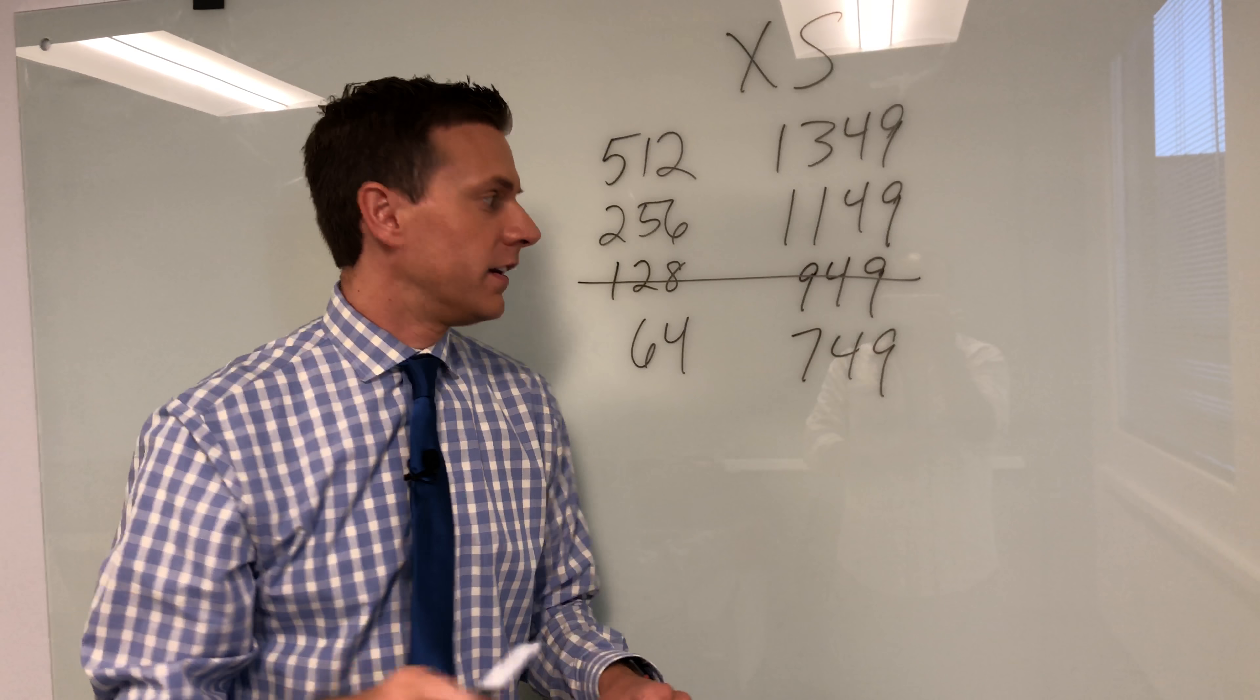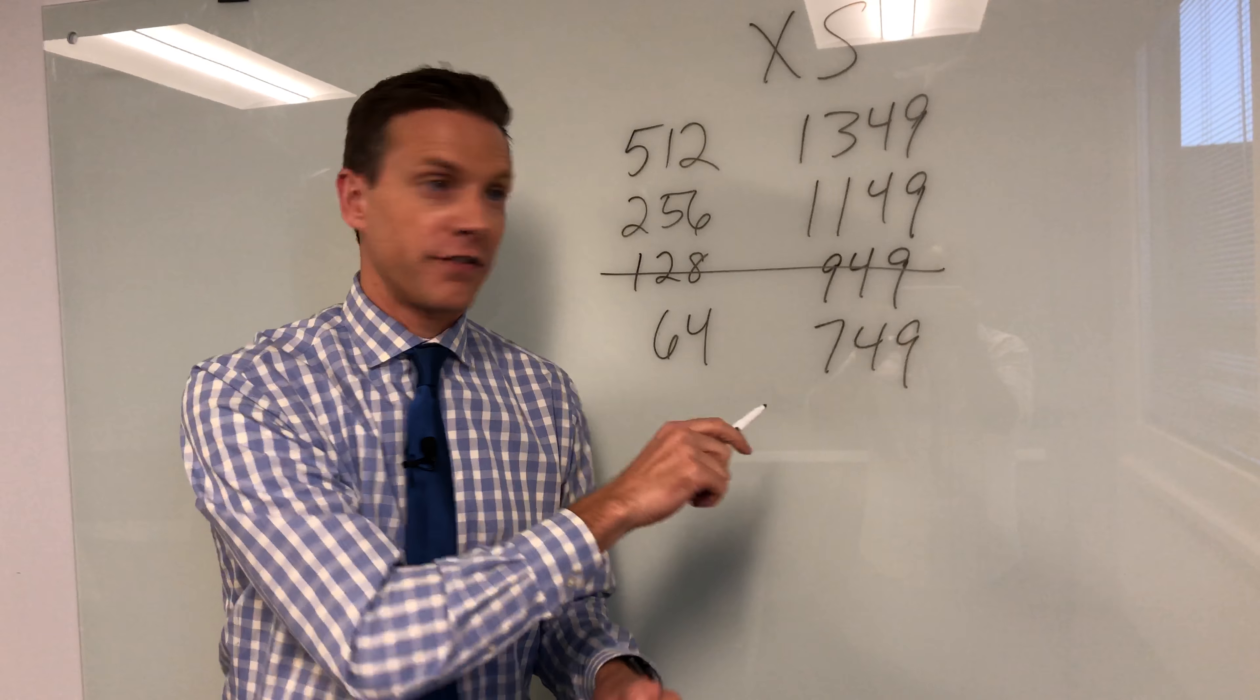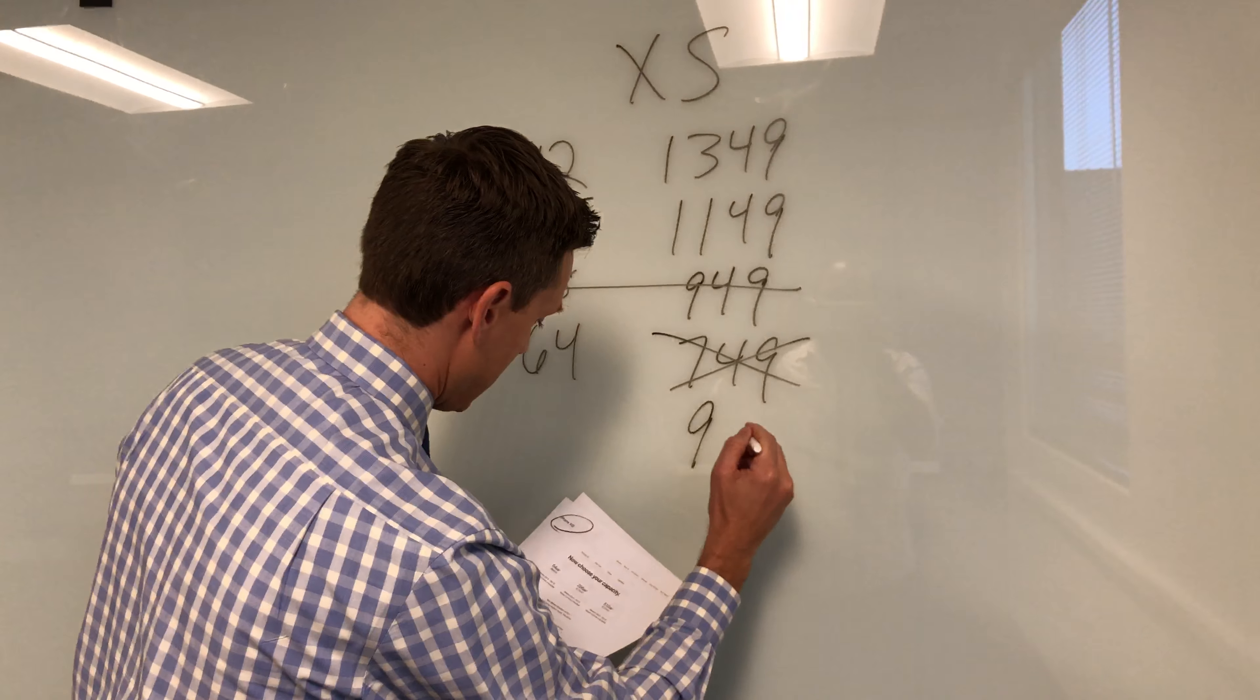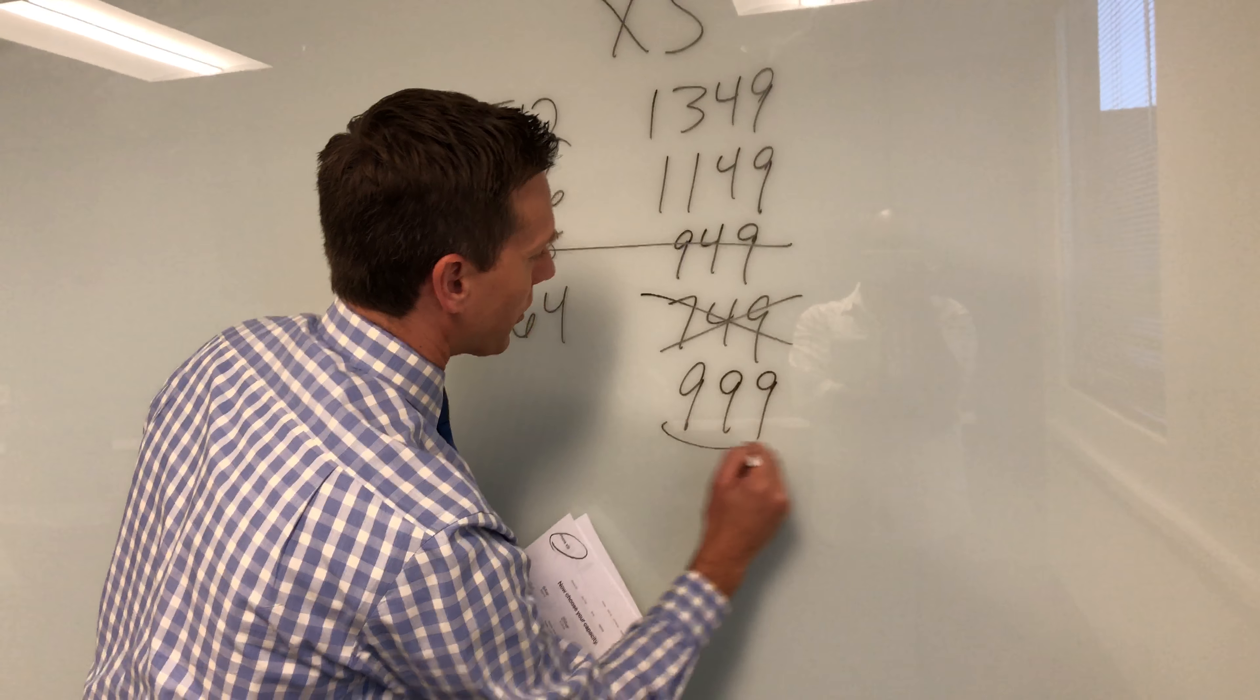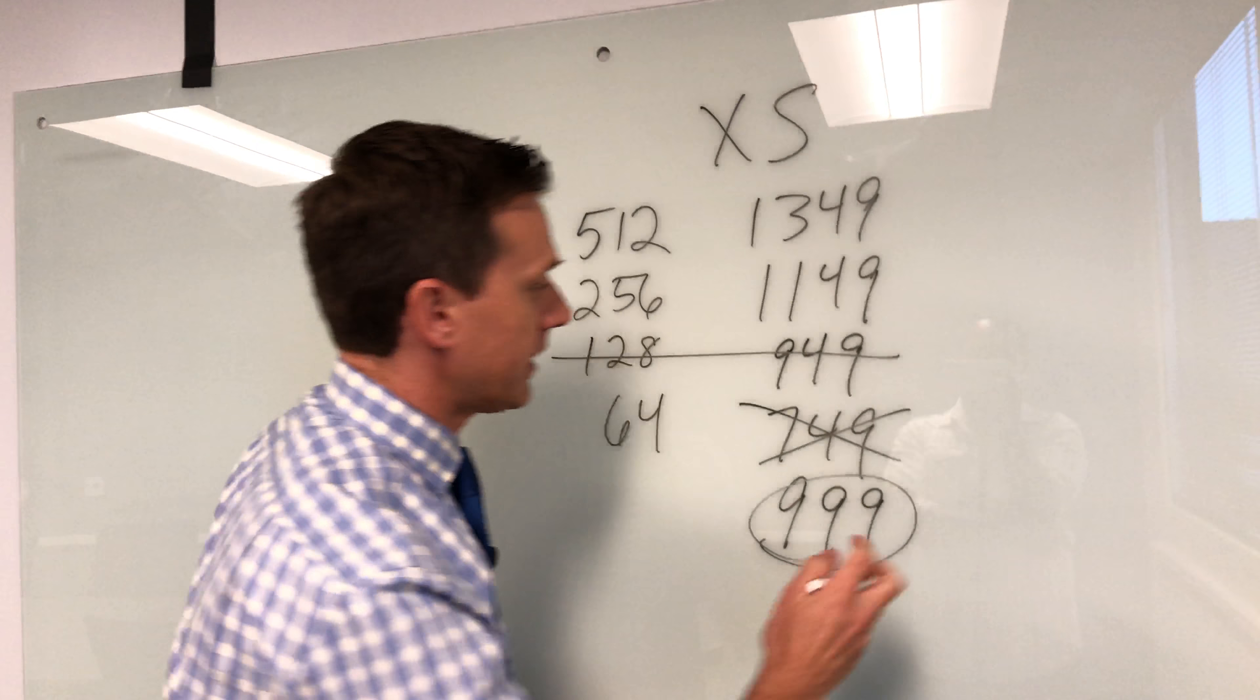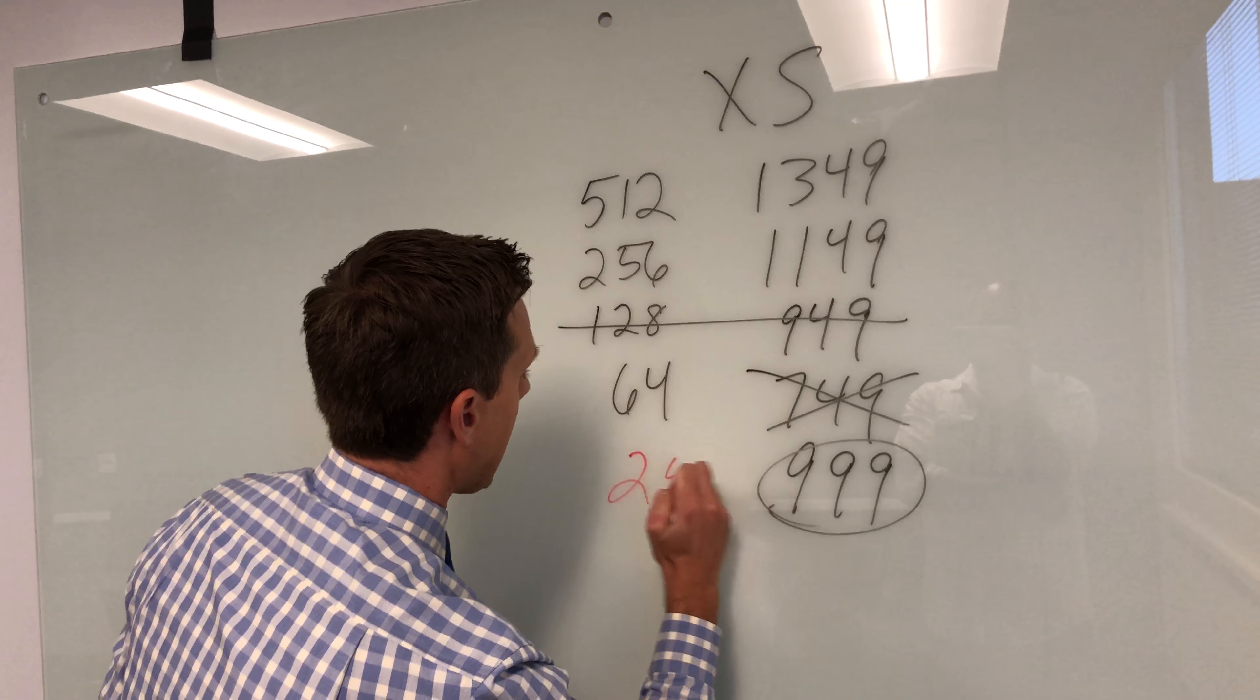And you might be thinking, hold on, 64 gigs is not $749. It's actually $999, a difference of, let me get a better color here so you can see, $250.